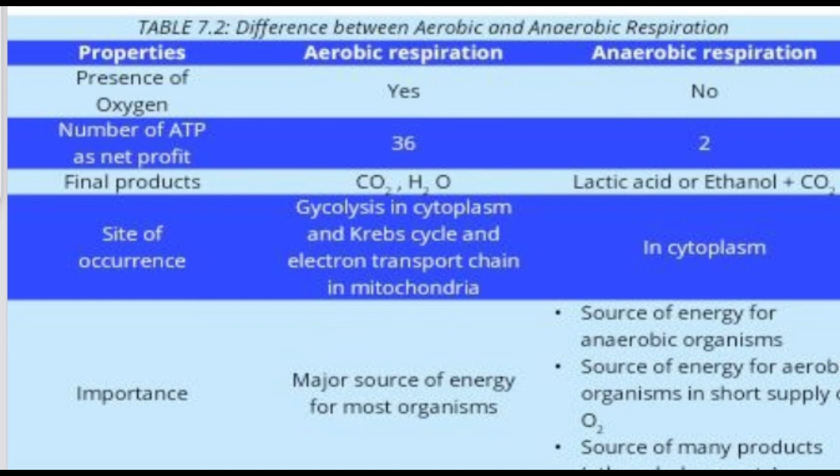The site of occurrence for aerobic respiration is: glycolysis in the cytoplasm, and the Krebs cycle and electron transport chain in the mitochondria. So the breakdown of glucose occurs in the cytoplasm, and the Krebs cycle and electron transport chain occur in the mitochondria, which is the powerhouse of the cell. Anaerobic respiration occurs only in the cytoplasm.